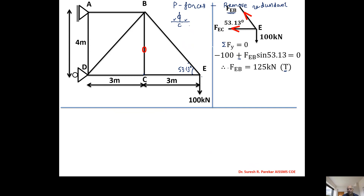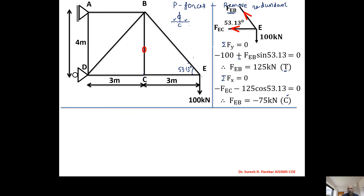Now applying summation FX = 0 at joint E, the only unknown is FEC. We get: minus FEC minus FEB × cos 53.13 = 0. With FEB = 125 kN, we get FEC = minus 75 kN, which is compression. Showing these forces in the diagram: EB = 125 kN tension, EC = 75 kN compression.